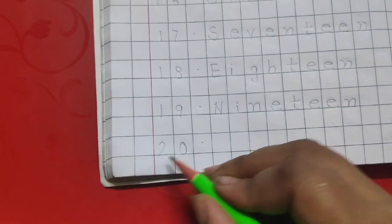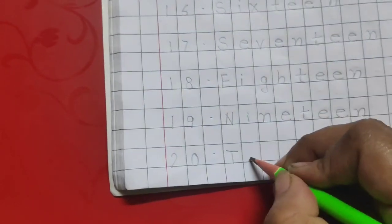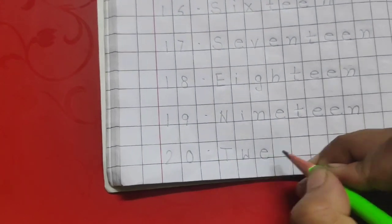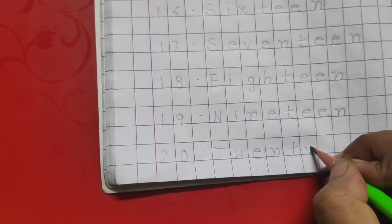The last number is 20. The number name for 20 is T-W-E-N-T-Y.